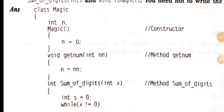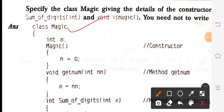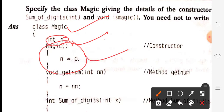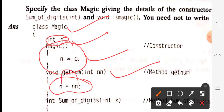Now look at the solution. Starting with class Magic — already given. int n as variable. Magic is your constructor, assign zero to it. getNum is the function used to assign double n into n. Up to here I hope everything is clear — all the things are basics.